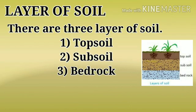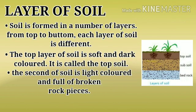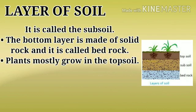Next, we will discuss the layers of soil. There are three layers of soil: topsoil, subsoil, and bedrock. Soil is formed in a number of layers, and from top to bottom, each layer is different. The top layer of soil is soft and dark in color — it is called topsoil. The second layer is light-colored and full of broken rock pieces — it is called subsoil. The bottom layer is made of solid rocks and is called bedrock.